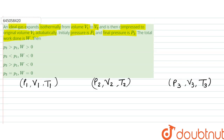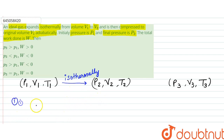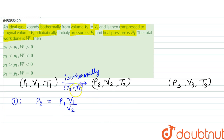What is given is that we are expanding it isothermally from volume v1 to v2, so it is going isothermally from here to here. In the first process, since it is isothermal, we can say p2·v2 = p1·v1, so p2 = p1·v1/v2. Since it is isothermal, t2 = t1.